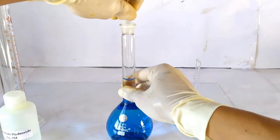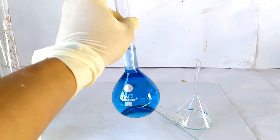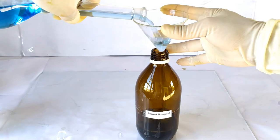Stopper the flask and invert it several times to homogenize the solution. Transfer the prepared reagent into a suitable labeled container.